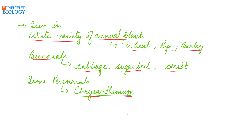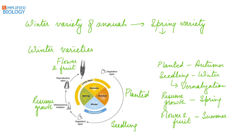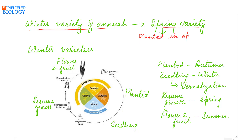Some perennials like chrysanthemum also show vernalization. Perennials are plants that survive for many years, and after cold treatment they flower and fruit each year. The winter variety of annuals like wheat, rye, and barley also have a spring variety, which is planted in spring and flowers and fruits in the same season.